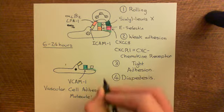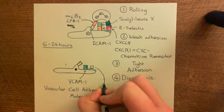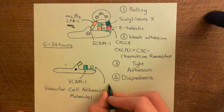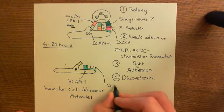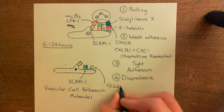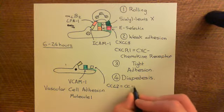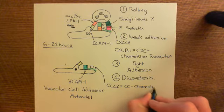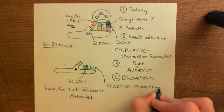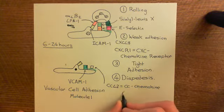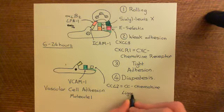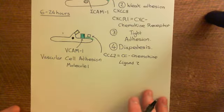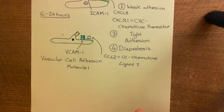You're also going to start producing a new chemokine, this time within the CC family of chemokines. It is CC chemokine ligand 2, CCL2, and this will be mounted on heparan sulfate proteoglycans within the glycocalyx on the surface of the endothelial cell.